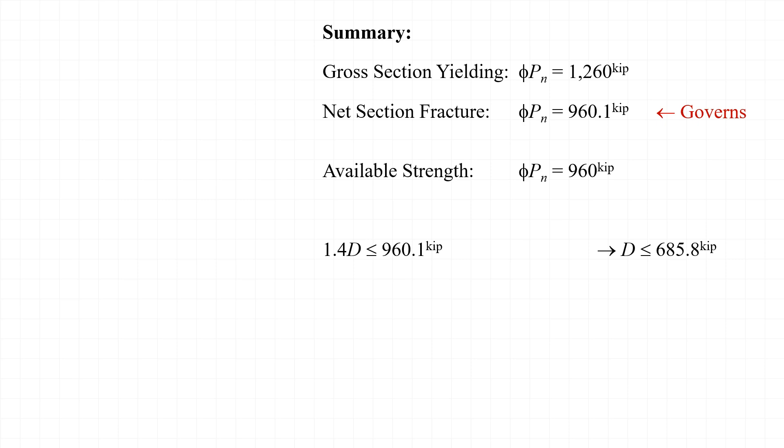The goal is to determine how much dead load this member could support, so we'll back substitute into the first of our load combinations, where the factored loads are equal to 1.4 times D, and solving for the dead load D, we would be able to support 685.8 kips. Taking a look at the second of the two load combinations, where we have 1.2 times D plus 1.6 times L, we could see that we would be able to support a dead load D of 768 kips. So the lower of those two is going to be the governing value, and we can determine that the maximum dead load that member can support is 685 kips.